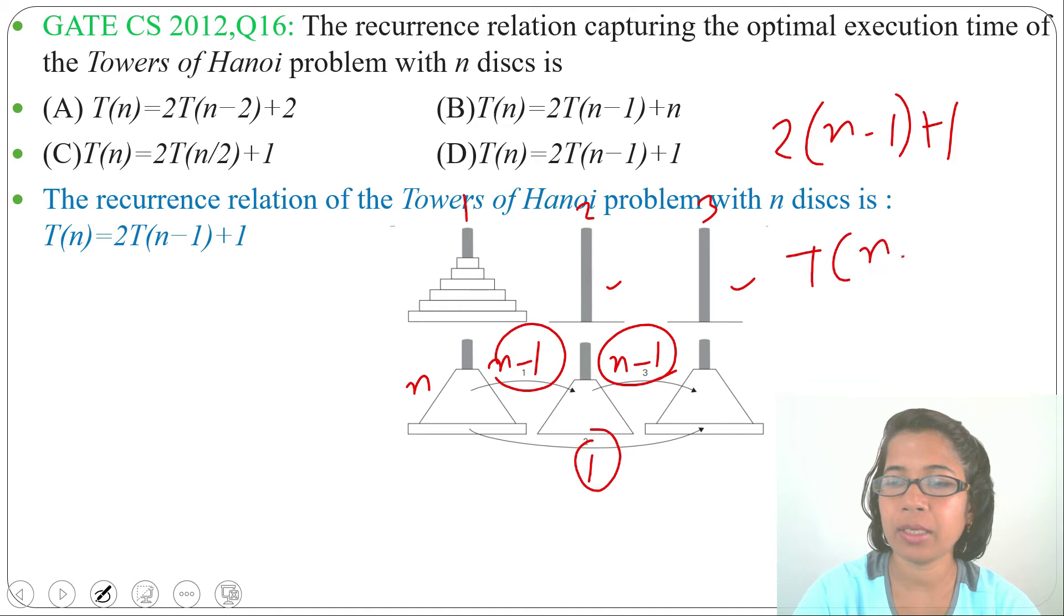T(n-1) is for moving n-1 disks from peg 1 to peg 2, again T(n-1) is for moving n-1 disks from peg 2 to peg 3, and 1 for moving the large disk directly from peg 1 to peg 3.